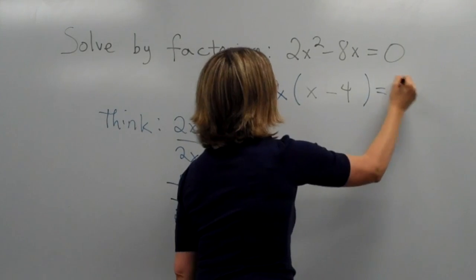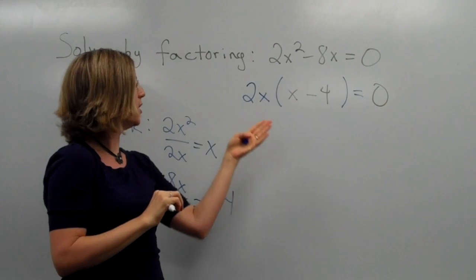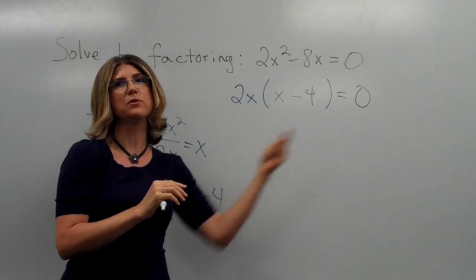And that equals to 0, right? Because in our original equation, 2x squared minus 8x equal to 0. So now this, the 2x, times the quantity x minus 4 equals 0.